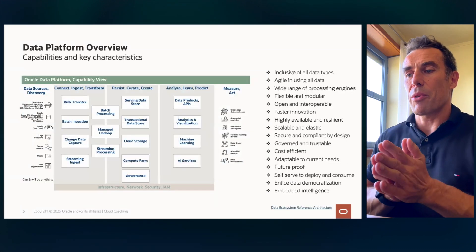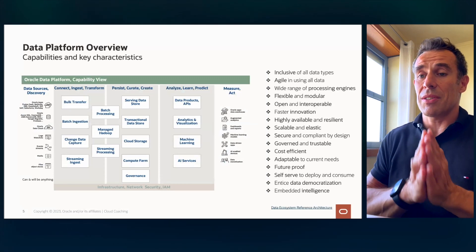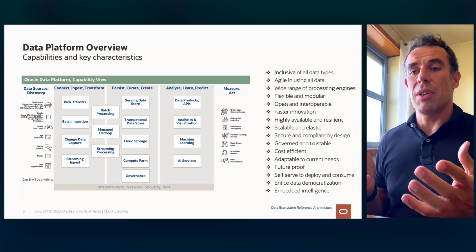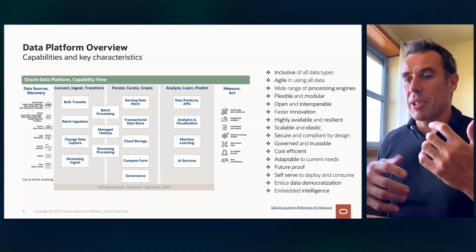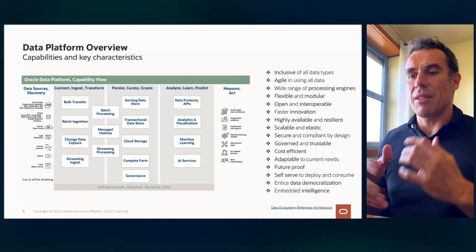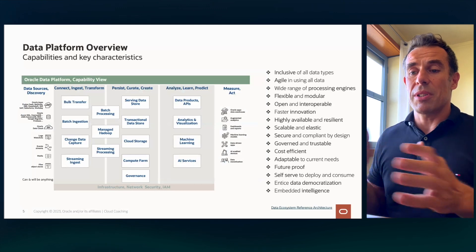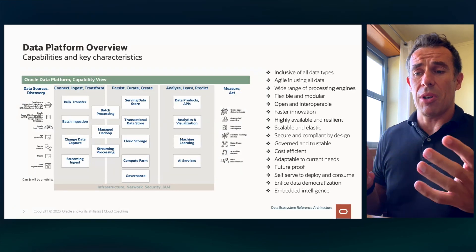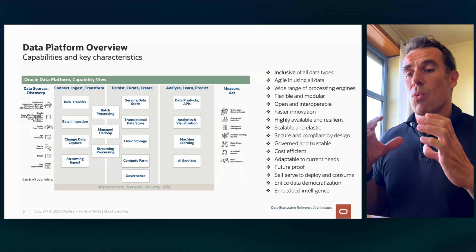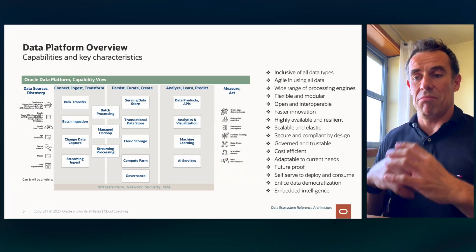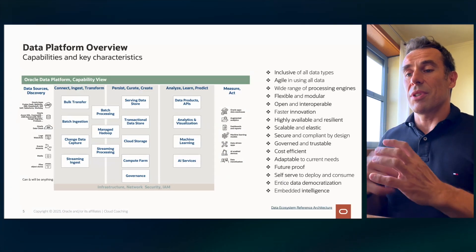In terms of capabilities, from left to right: we have services for connecting to data sources and ingesting data — whether in bulk, batch, micro-batch, change data capture, or streaming. Once ingested, you transform, augment, and validate the data using various engines such as Spark, Flume, Flink, Data Warehouse SQL, or PL/SQL, moving from raw data to information. You then store data on the persist-curate layer and use it for different purposes — data products, data sharing, APIs, visualizations, or ML and AI services.